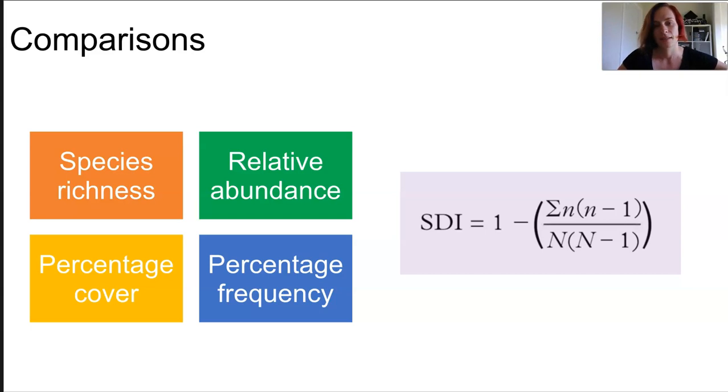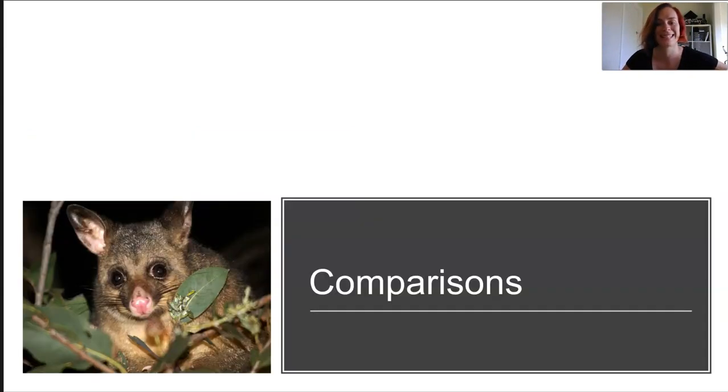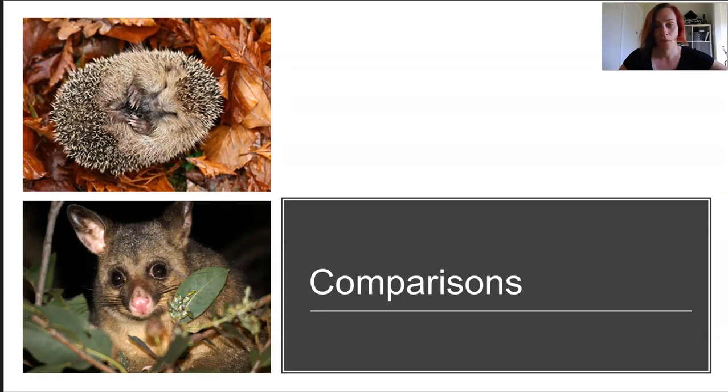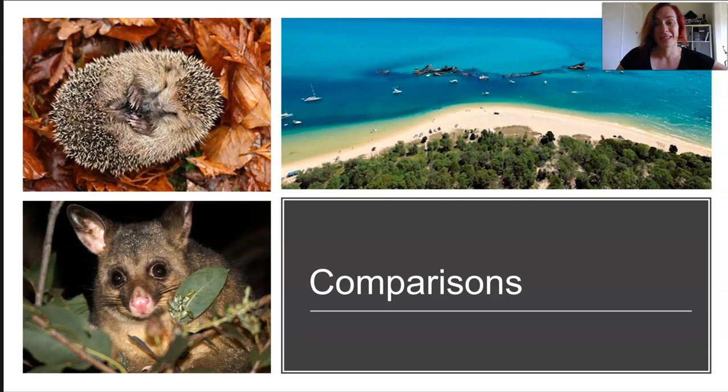Even if our biases are completely eliminated and our sampling techniques are impeccable, our sampling is still only representative of a moment in time and space. If we sample in the day we might not count nocturnal animals; if we sample during winter we might miss hibernating animals or dormant plants; if we sample the shoreline we might not see all marine life in the bay. All of this can be misleading to our assumptions about a particular ecosystem.